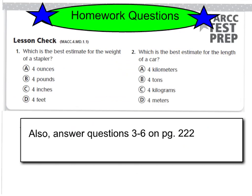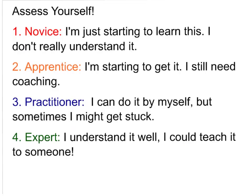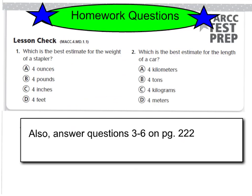Here are your homework questions for tonight on page 222 of your GoMath book — you'll answer numbers 1 and 2, and also questions 3 through 6. If you don't remember how to use your benchmarks for customary or metric units, you can always rewind the video to review. When you're done with your homework, assess yourself and put your level in the top right corner of your GoMath book: level 1 for novice, level 2 for apprentice, level 3 for practitioner, or level 4 for expert. I'll see you tomorrow in class!